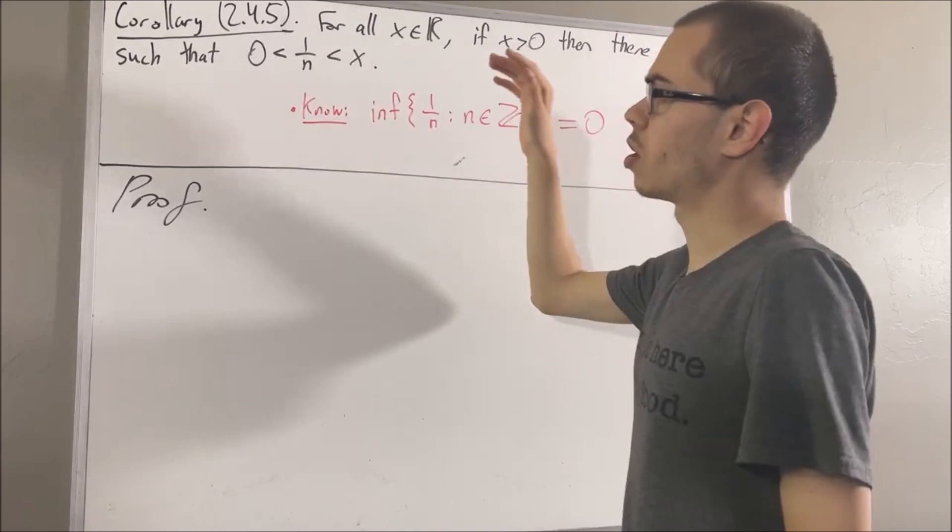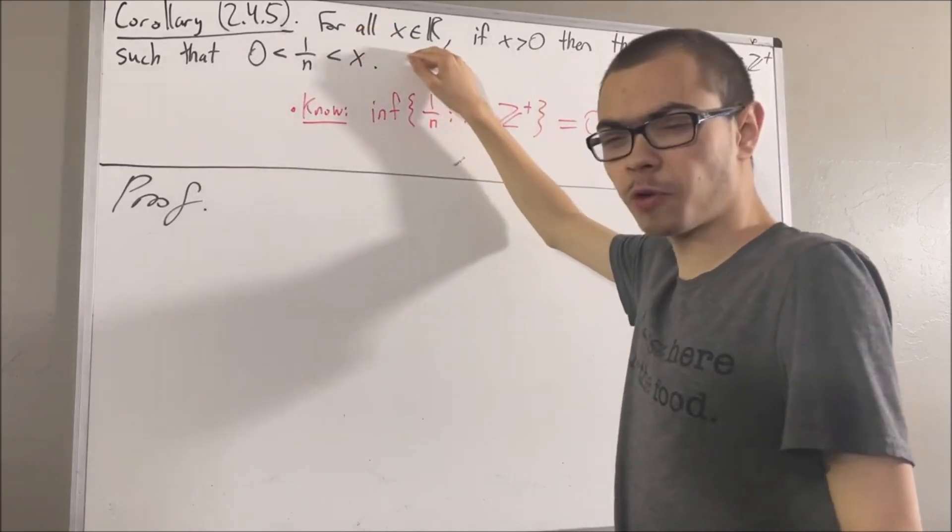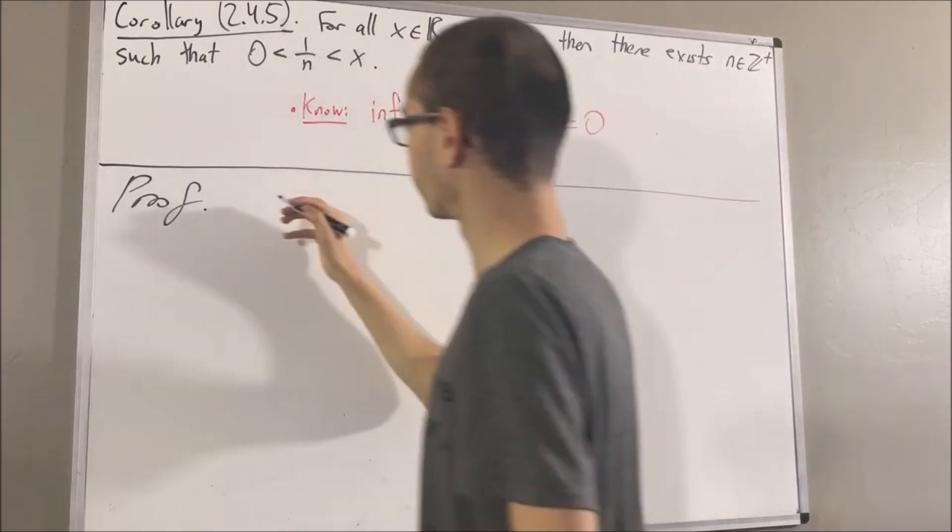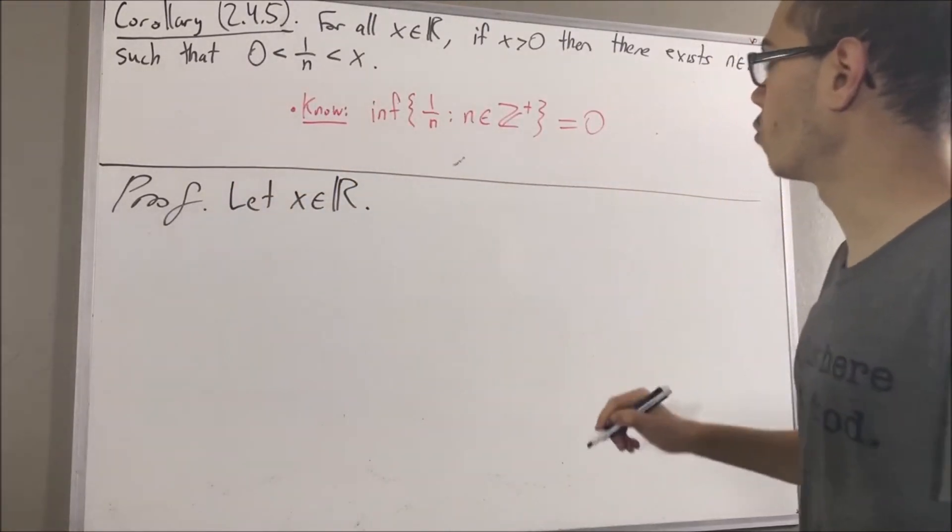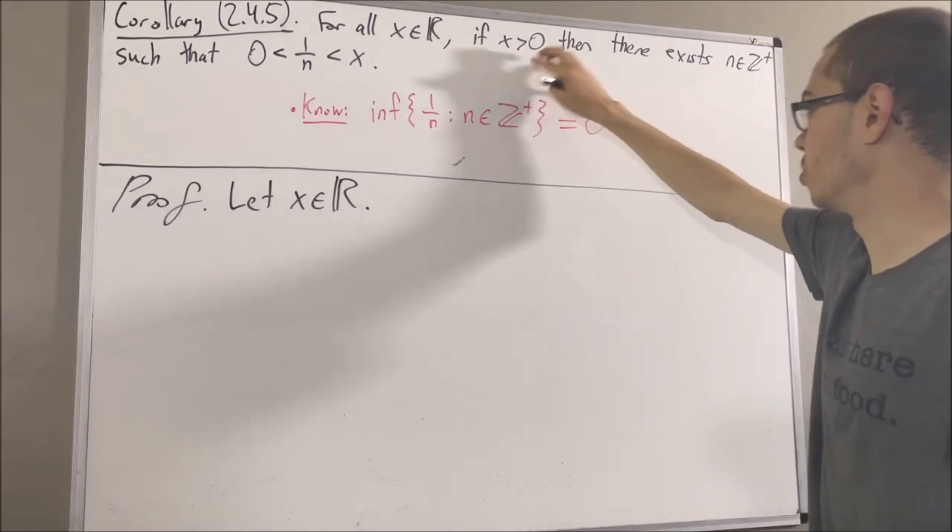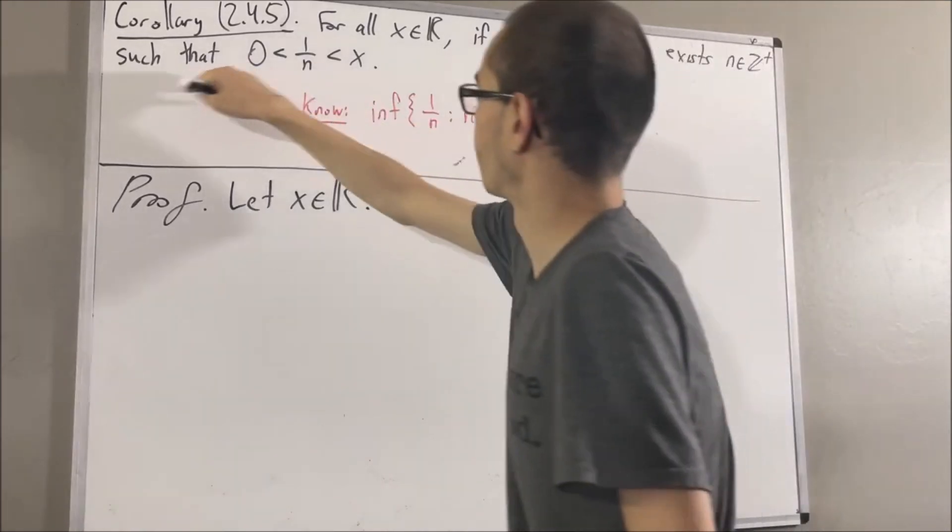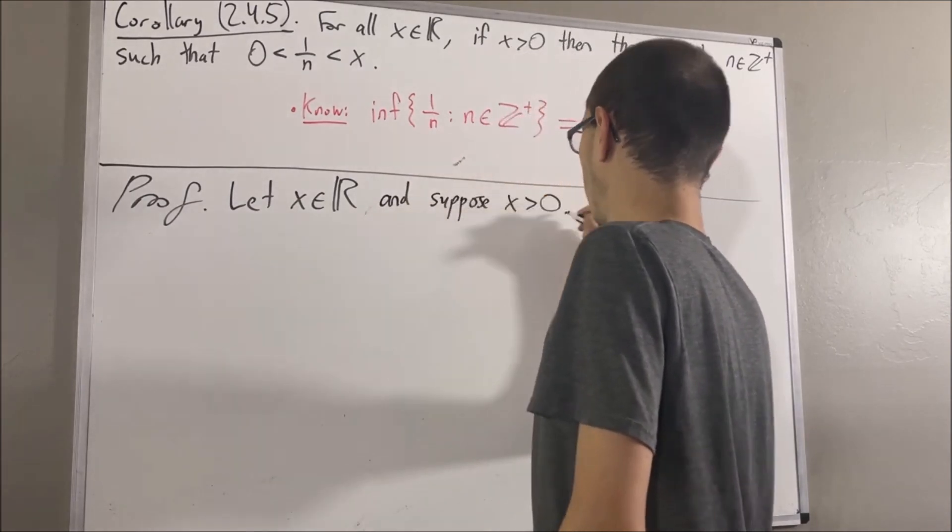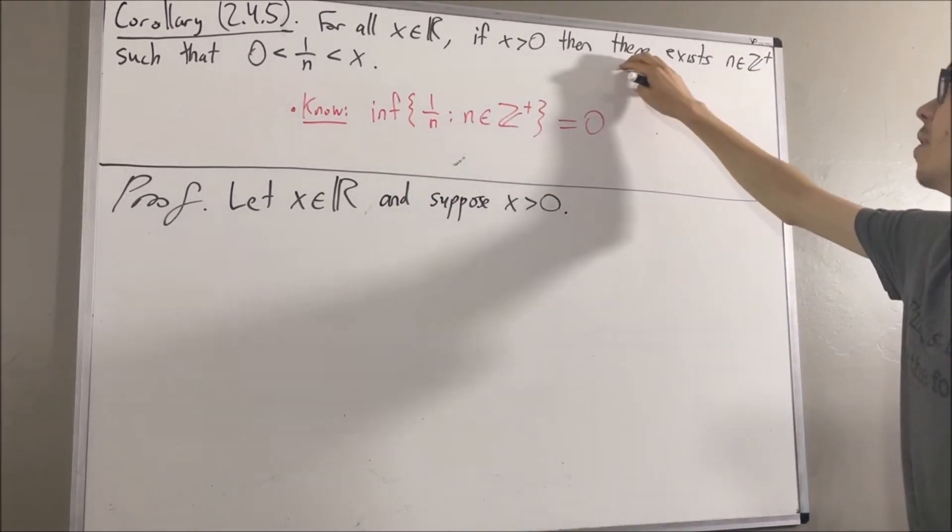Now since we are trying to prove a statement about every real number, give me an arbitrary real number. I'll call it x. And from here we want to prove if this is true then this is true. So let's suppose that this is true. And from here we want to show this is true.